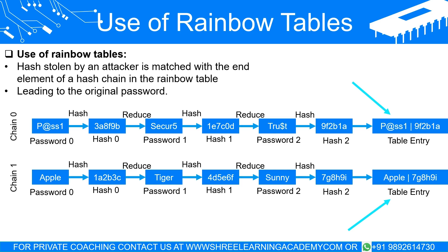Utilizing rainbow tables in attacks: when an attacker steals a hash, they can use a rainbow table to find a matching end element of a hash chain. Once they find a match, they compute the hash chain from the corresponding starting password to determine the original password that produced the stolen hash.